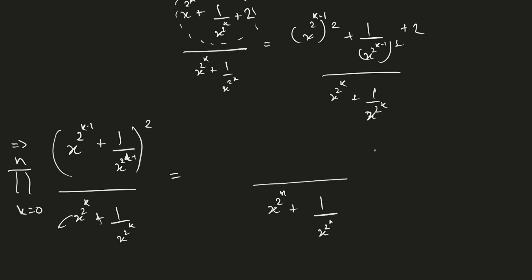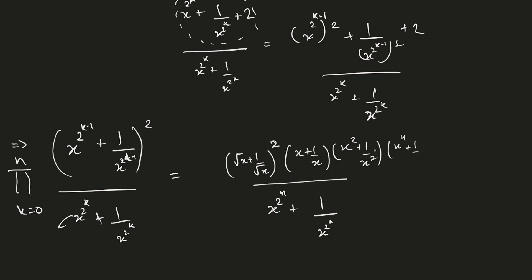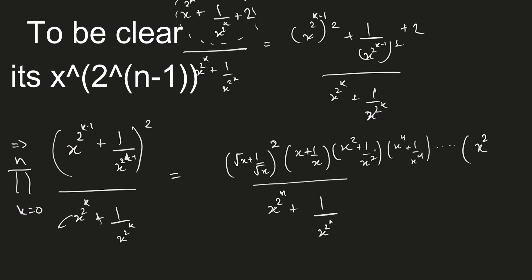Which terms in the numerator will have an intact power of 2? The numerator gets cancelled by its very previous term, so the term without a previous term is at k = 0. So (√x + 1/√x)^2 is the only term with a power of 2 in the numerator, and all others have a power of 1: x + 1/x, x² + 1/x², x⁴ + 1/x⁴, continuing until x^(2^(n−1)) + 1/x^(2^(n−1)).